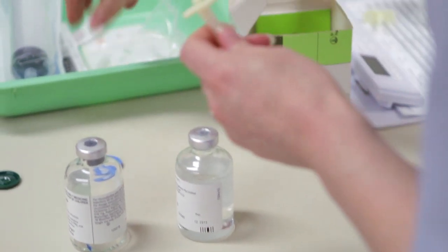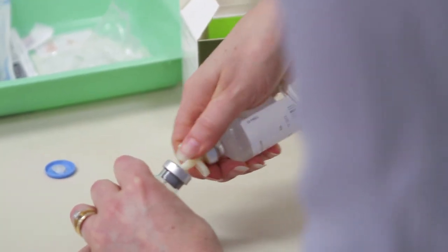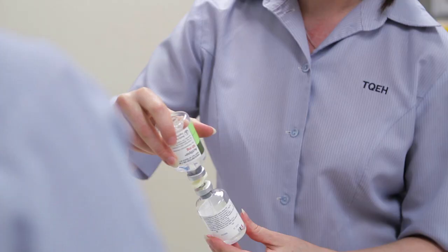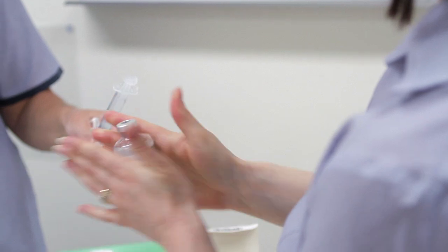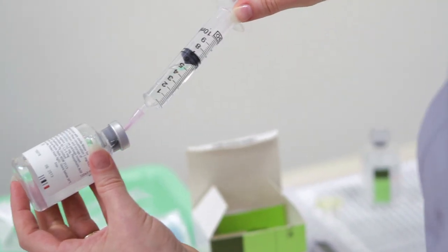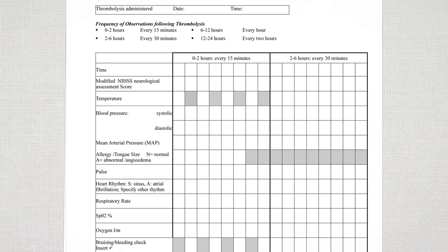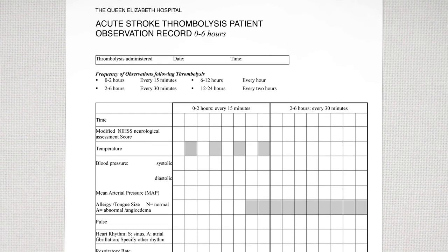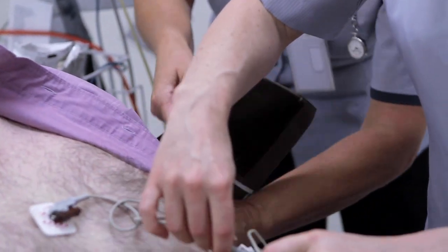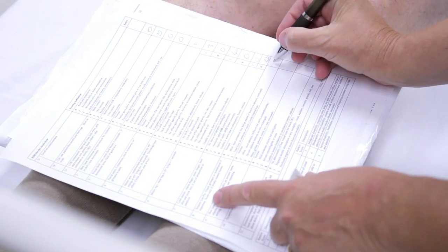Actilase is given at 0.9 milligrams per kilogram; the maximum dose is 90 milligrams, supplied in 50 mg and 10 mg vials. The patient will have a cardiac monitor in situ and be constantly observed for bleeding, headache, changes in clinical signs, allergic reaction, angioedema, and anaphylaxis — rare but possible. By completing standardised neurological and frequent vital signs observations, early detection of deterioration will be achieved. The modified NIHSS covers level of consciousness, visual fields, gaze, arm and leg movement, sensation, language, and neglect — with a possible score out of 32.